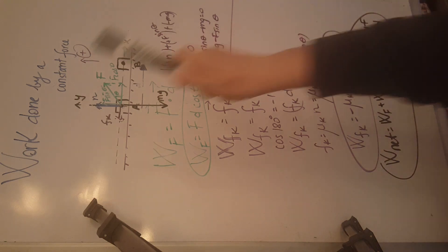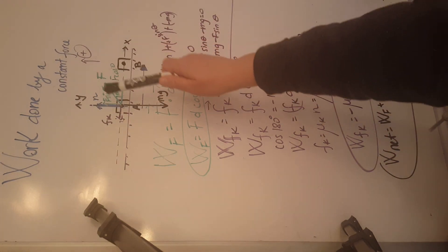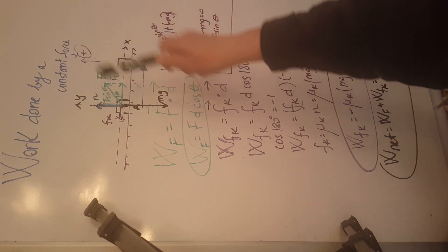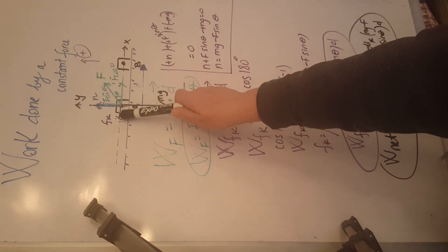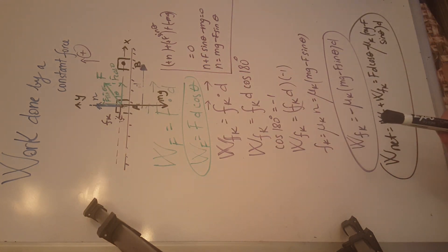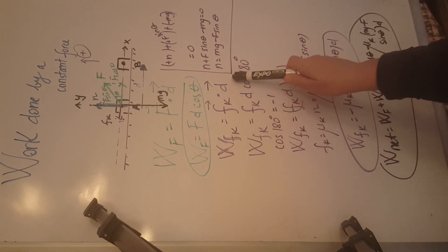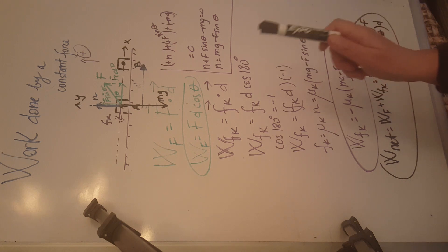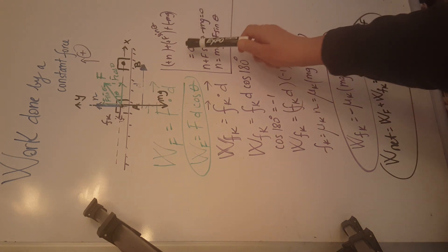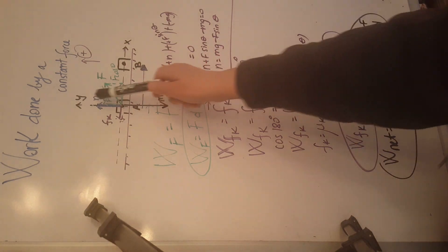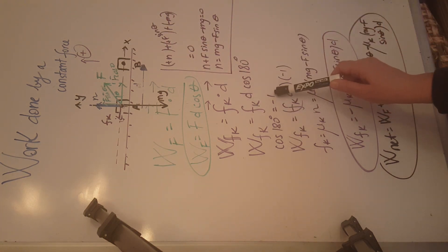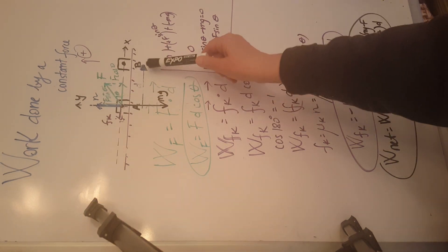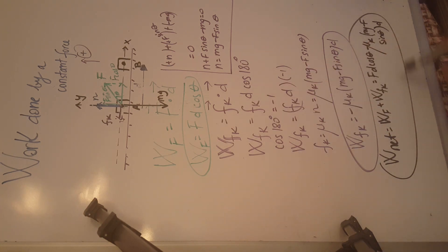To summarize: we calculated the work done by a constant force by first finding the work done by force F in green — Fd cosine theta — then the work done by friction in purple using the dot product of Fk and d. We found Fk equals mu_k times n, calculated n from the balance of forces along the y-axis, remembered that cosine 180 equals negative 1, and added the two expressions to get the net work.